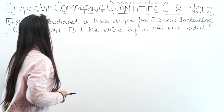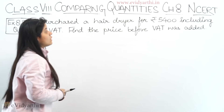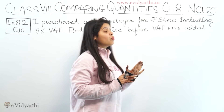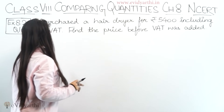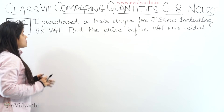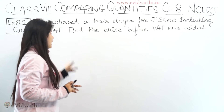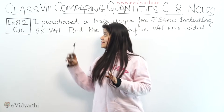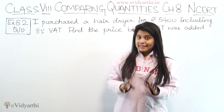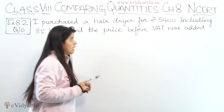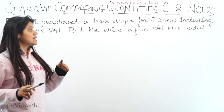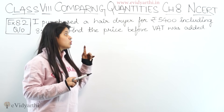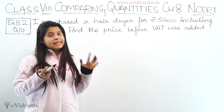In this question: I purchased a hair dryer for rupees 5400 including 8% VAT — VAT means value added tax, so VAT is a type of tax. So the hair dryer was purchased for rupees 5400, and VAT is included in that amount.